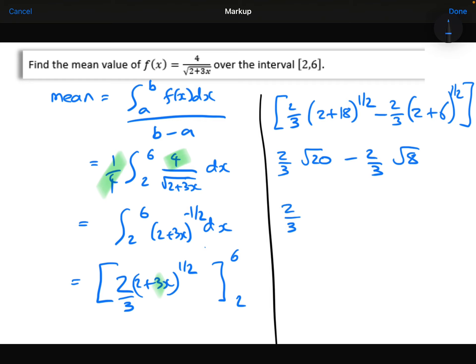Factorize the 2 thirds. Root 20 is the same thing as 2 root 5. Root 8 is the same thing as 2 root 2. So this whole thing becomes 4 thirds root 5 minus root 2.